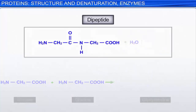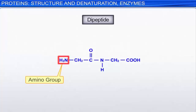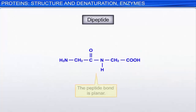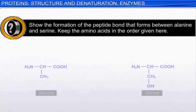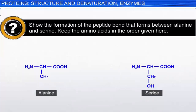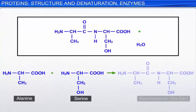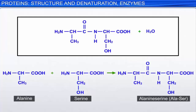By convention, the amino end is shown on the left and the carboxyl group is on the right of the resulting dipeptide. Also note that the peptide bond is planar — the C, O, N, and H atoms are all in the same plane along with the alpha carbons. The alanine-serine dipeptide, represented as Ala-Ser, results from the peptide bond that forms between alanine and serine.